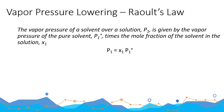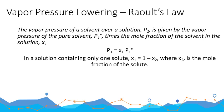Vapor pressure lowering runs under Raoult's law. Raoult's law states that the vapor pressure of a solvent over a solution, P1, is given by the vapor pressure of the pure solvent P1° times the mole fraction of the solvent in the solution, X1. In a solution containing only one solute, X1 is equal to 1 minus X2, where X2 is the mole fraction of the solute. Therefore, the vapor pressure lowering is equal to X2 multiplied by P1°.